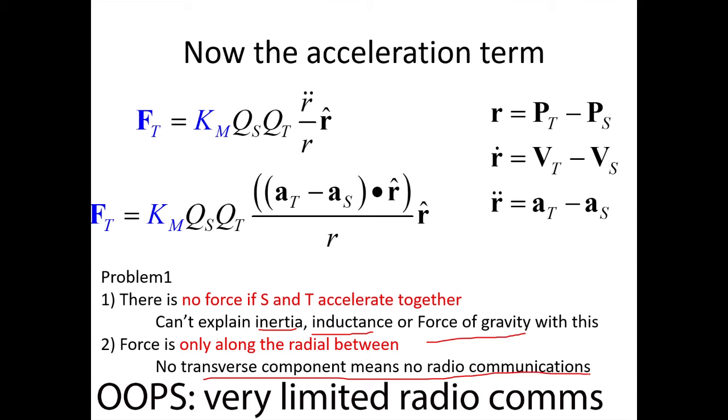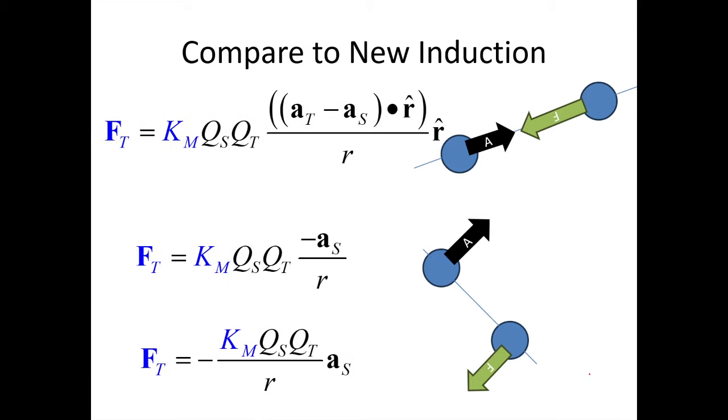Now let's just compare this to new induction for the sake of beating Weber's dead horse here. Okay, this is again the Weber and we're going to compare it to new induction. You can see that your final vector is dependent on the direction of your source charge, not on the radius between them. And because of that, all of your charges can contribute and therefore you can have the definition of inertia and the definition of inductance. And basically, look here, if I rearrange new induction, I get force equals minus M A.